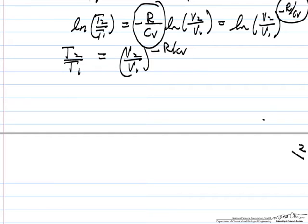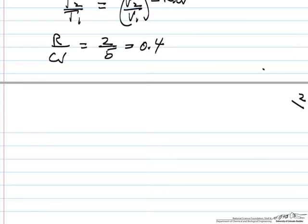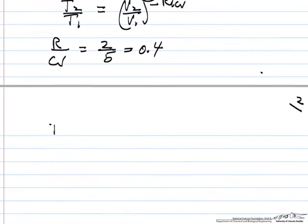And a reasonable value for R over Cv is two fifths, 0.4. So we can substitute in now the values. We have the final temperature which we don't know. Initial temperature 300 Kelvin, so we have to use absolute temperature in this calculation.